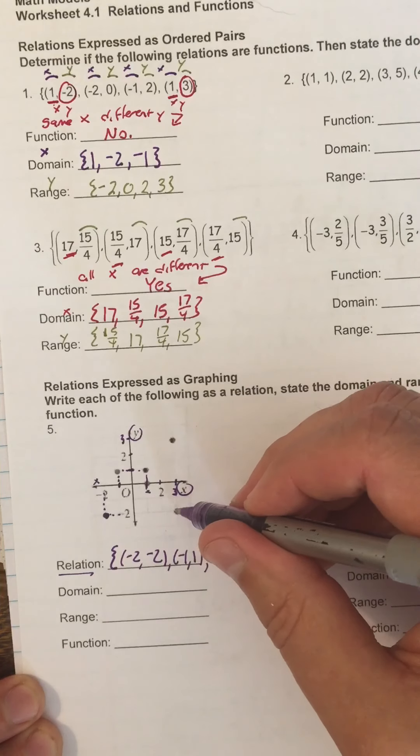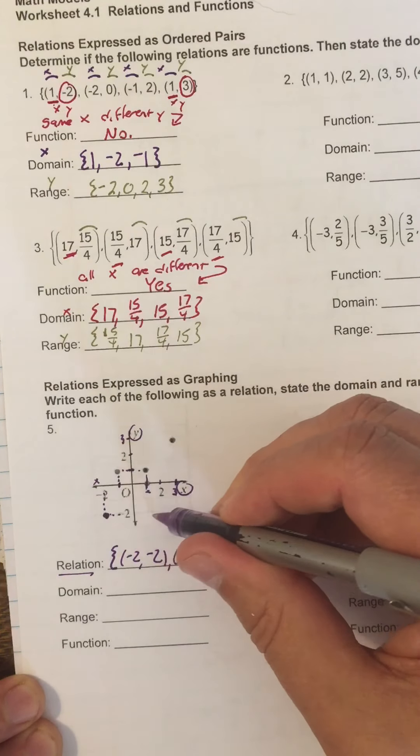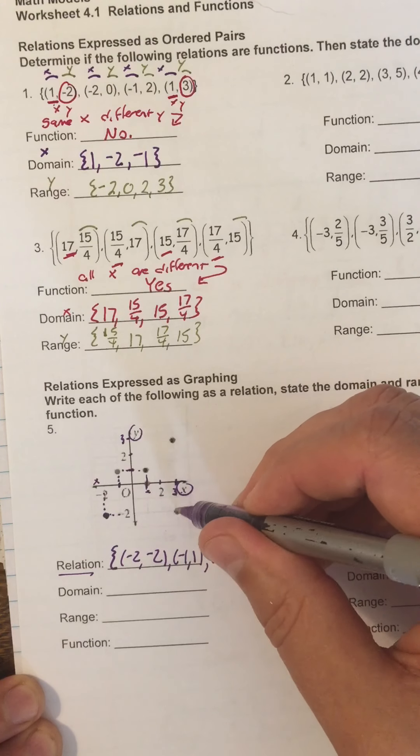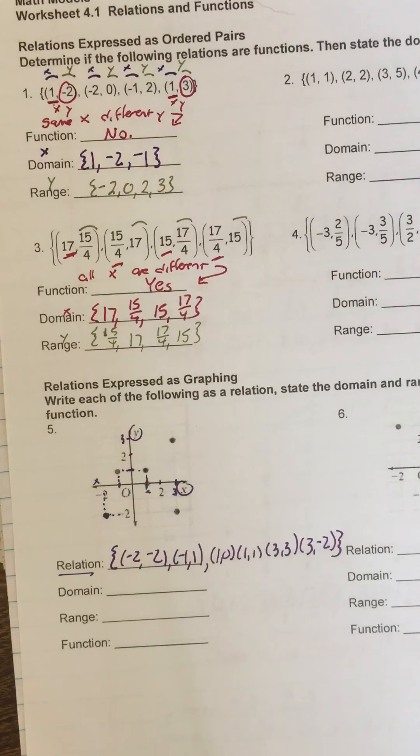And on this one, the x is 3, the y is negative 2. 3, negative 2. Always the x comes first, and then the y. And then that's all the points, so I close my bracket.